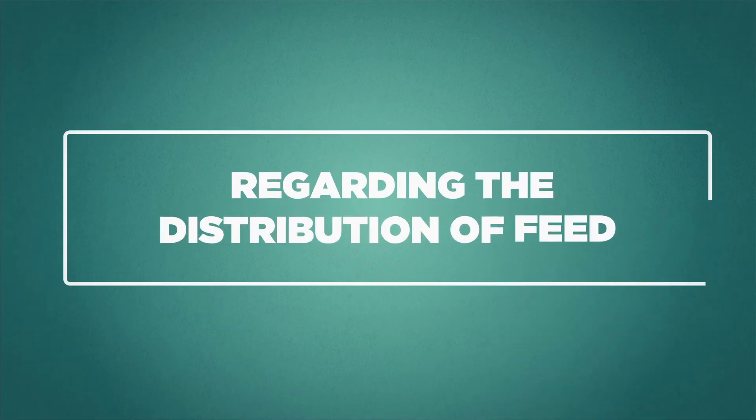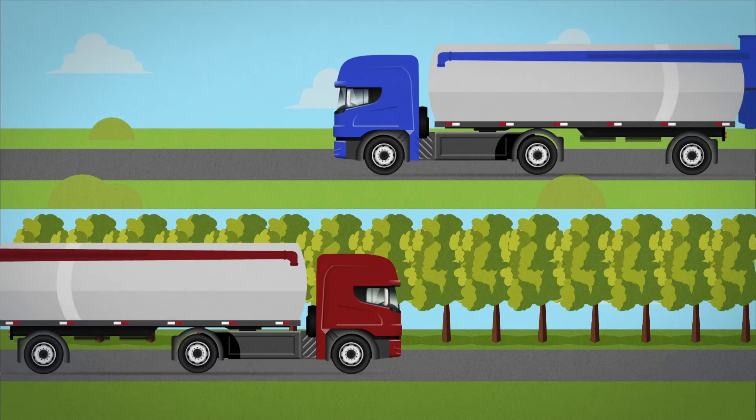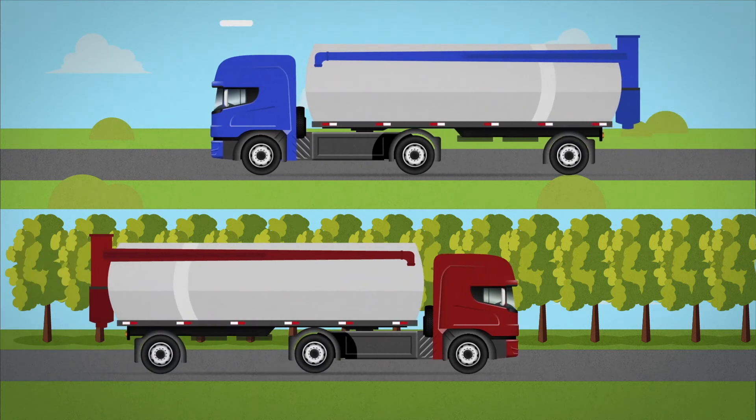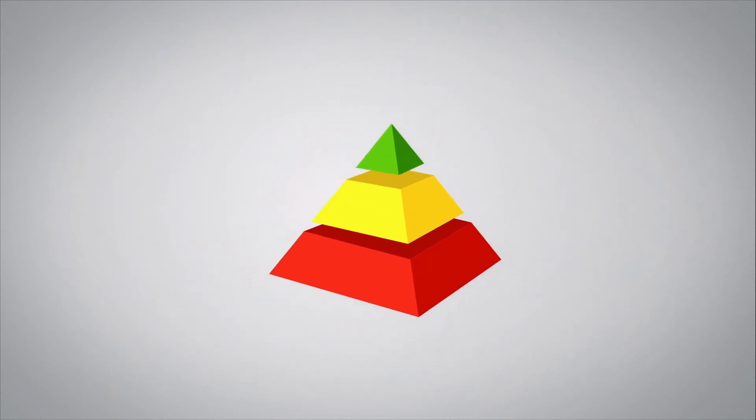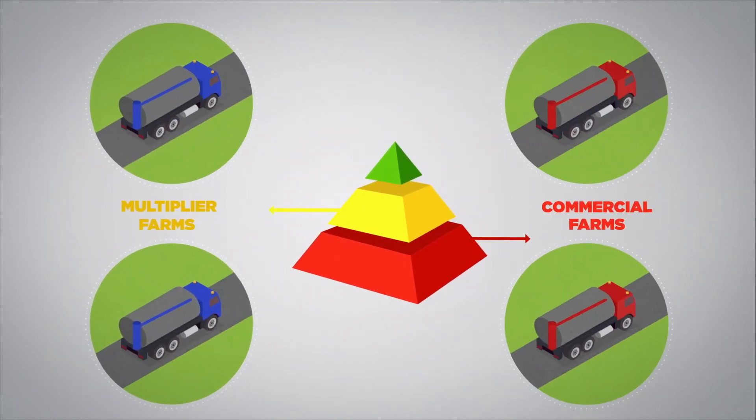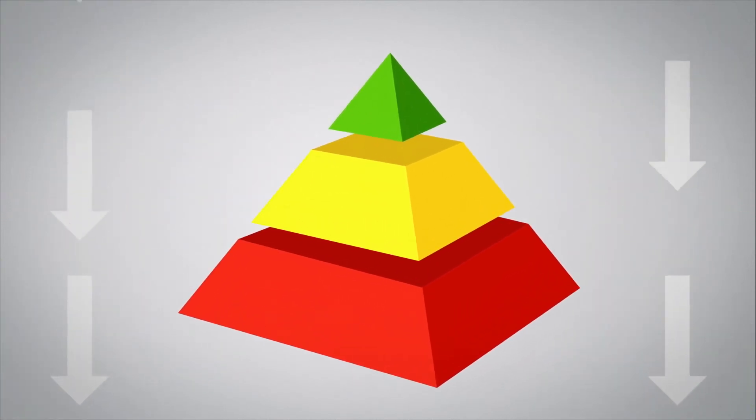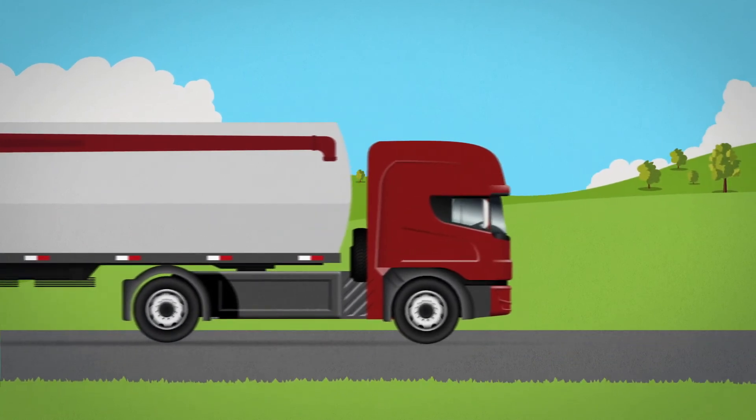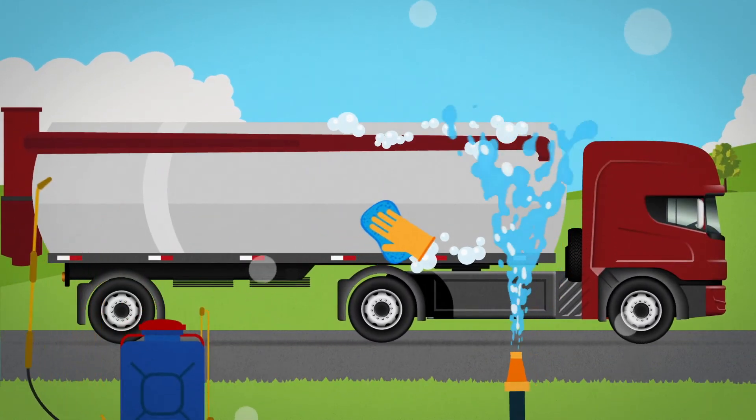Regarding the distribution of feed, genetic nucleus, sire line nucleus, and gene transfer centers should use dedicated feed transport vehicles. At minimum, trucks must be segregated between multiplier and commercial farms. All deliveries must follow a dynamic biosecurity pyramid. Trucks must be washed, disinfected, and dried to return to a farm higher up the pyramid.